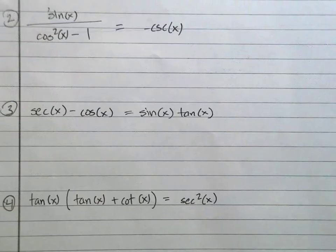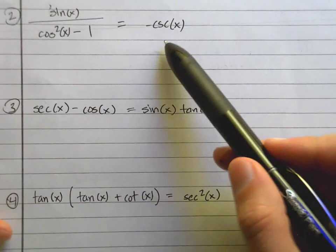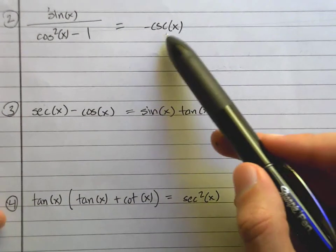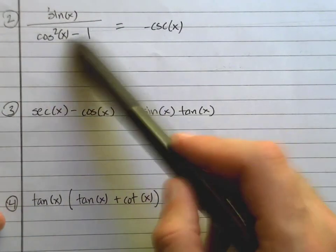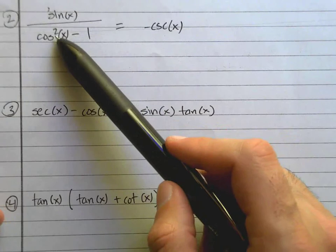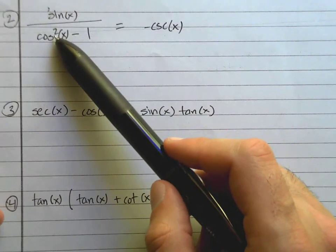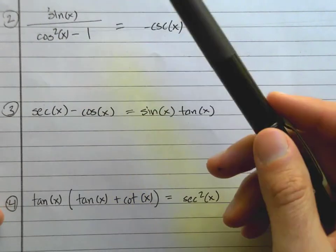Number two: sine X over cosine squared minus 1. I know the right side is negative 1 over sine X, but there's nothing I can directly rewrite. So I'll need to use the Pythagorean identity again.